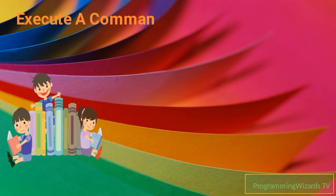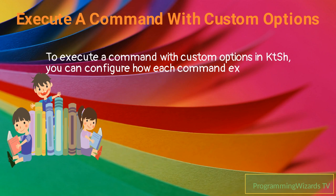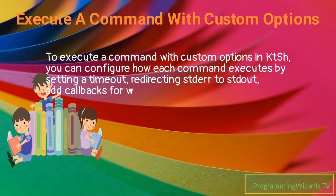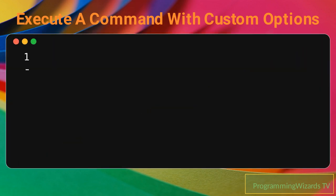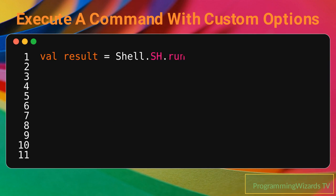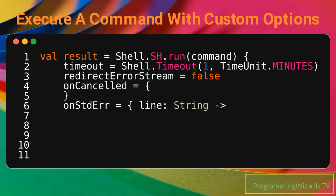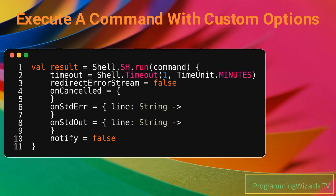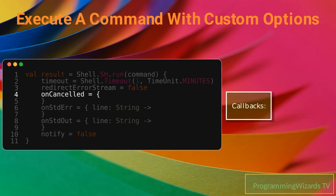How can I execute a command with custom options in KTSH? To execute a command with custom options in KTSH, you can configure how each command executes by setting a timeout, redirecting stderr to stdout, and adding callbacks for when the command reads a line from stdout or stderr, or is canceled. For example, kill the command after one minute, redirect stdout to stderr, and handle cancellation callbacks.